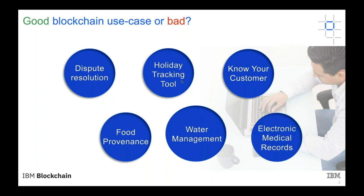Electronic medical records is another good use case from our experience. Building on the points mentioned earlier — there must be a business network, there must be participants, there must be an asset — and in medical records it's quite sensitive and there's a need of trust. So going through those examples necessitates us to ask what approach we should use to determine if something is a good blockchain use case or not.